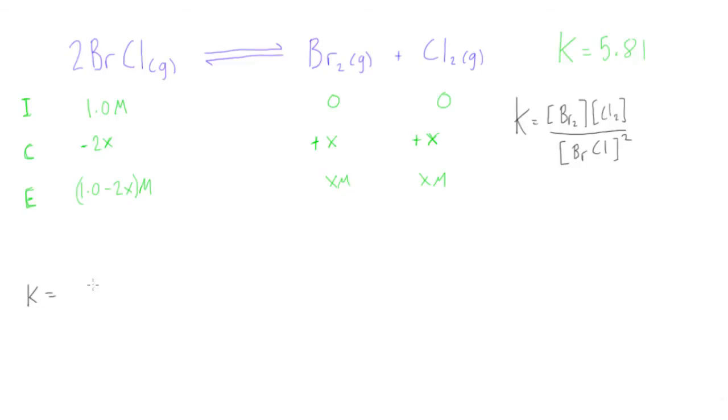We know what K is—K is 5.81. Now what we can do is we can fill in all of these. So we'll have X times X, or we can just write X squared—that's this X times this X—and this is going to be over 1 minus 2X, and this is all squared. Now what we can do is we can acknowledge here that this is a perfect square, so we can take the square root of both sides. The square root of 5.81 is 2.41.